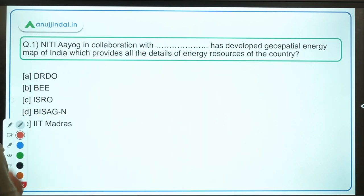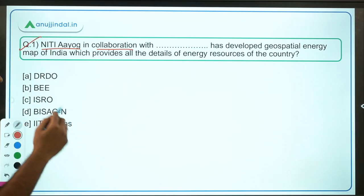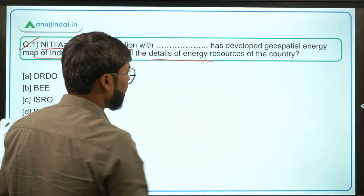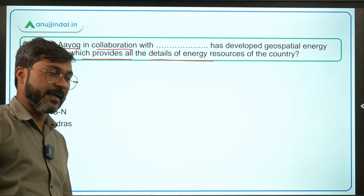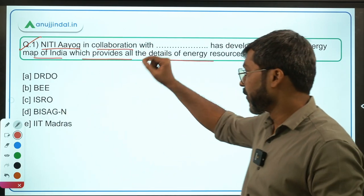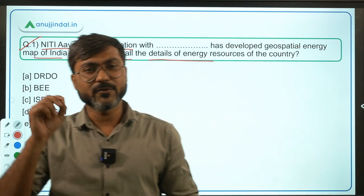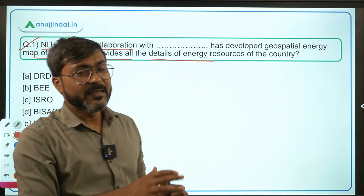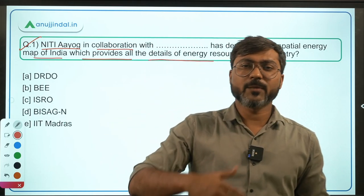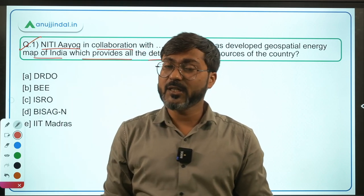The very first question says: NITI Aayog, in collaboration with whom, has developed the Geospatial Energy Map of India, which provides all the details of energy resources of the country? This is a very good step by NITI Aayog because with the help of this map, one can easily identify the primary and secondary energy sources, their locations, and how much resource is available in a particular area.